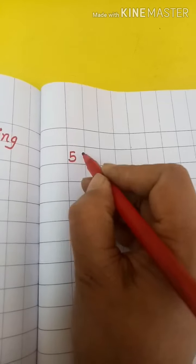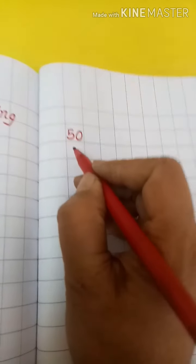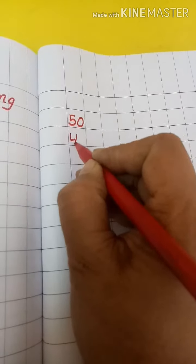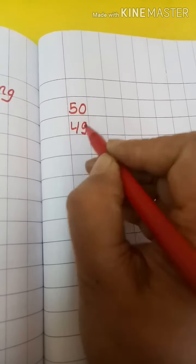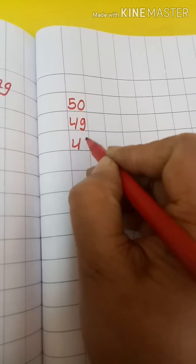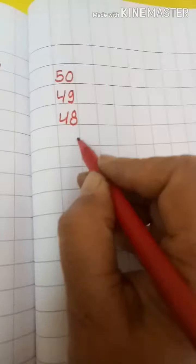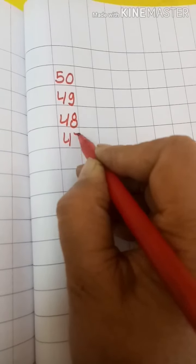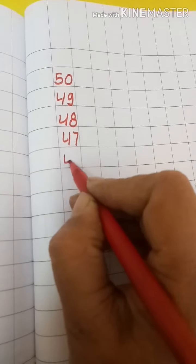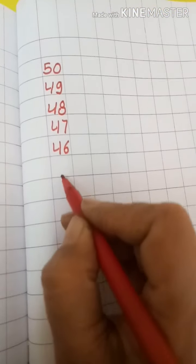Fifty. 50 के पहले क्या आता है? 49, ok. 49, 48, 47, 46.